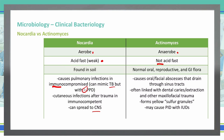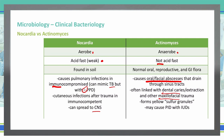Actinomyces, because it's normally found in the oral, reproductive, and GI flora, is most commonly associated with those areas. It can cause oral-facial abscesses that drain through sinus tracts. It's also linked to dental caries when you have teeth extracted or other types of maxillofacial trauma — the bacteria in your mouth gets inoculated into that location during a dental procedure, resulting in an Actinomyces infection in the maxillary area. Specifically with Actinomyces israelii, we get what are known as yellow sulfur granules — a very strong buzzword characteristic of this infection.